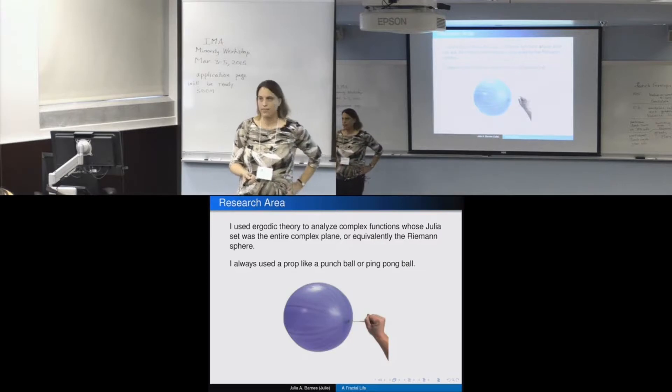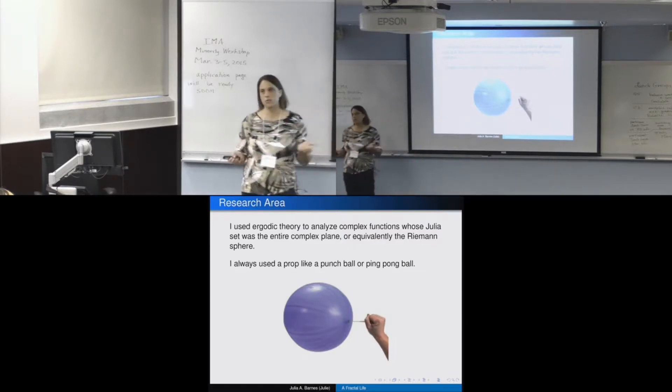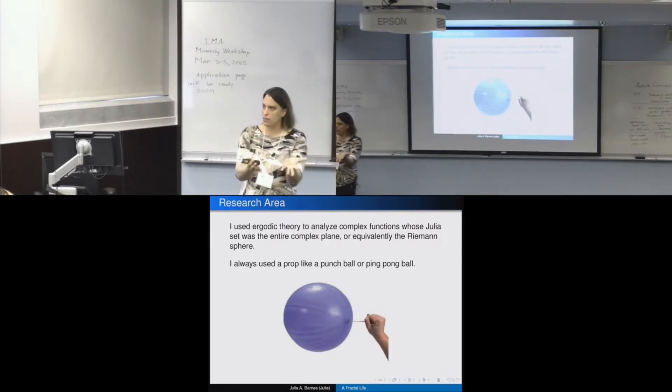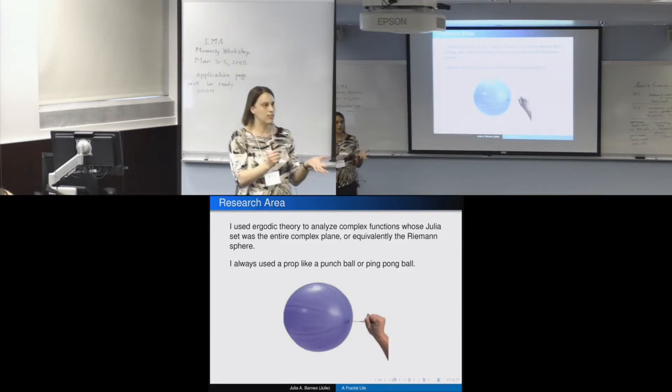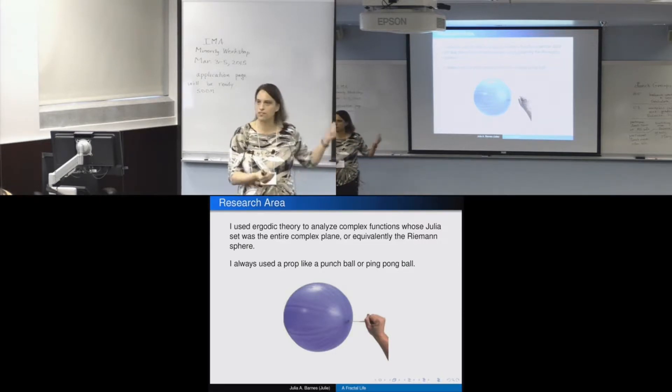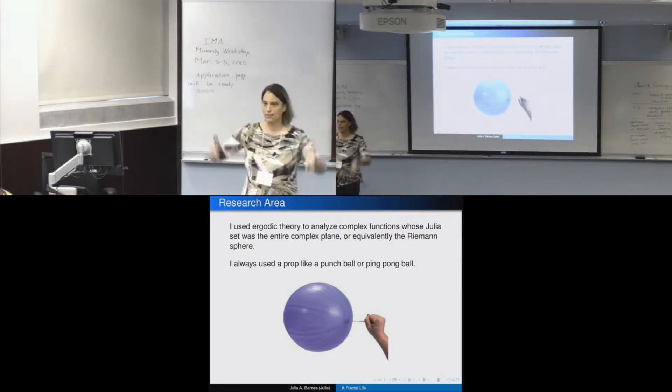So I like hands-on things. I even did in grad school. And when I was doing research talks, especially if it was a general audience or my job talk, I had a punch ball with me because I could hold up my punch ball and say, this is my domain space. This is my entire Julia set. And here's what points are doing. And I used a sharpie and drew on the ball. And you could see what I was doing. And the punch balls are round. I mean, balloons aren't perfect spheres. So this was great. And I'd bring out the punch ball.